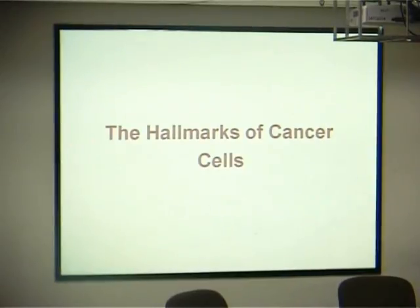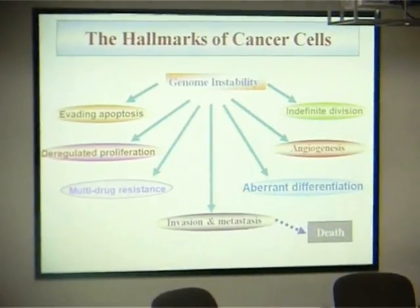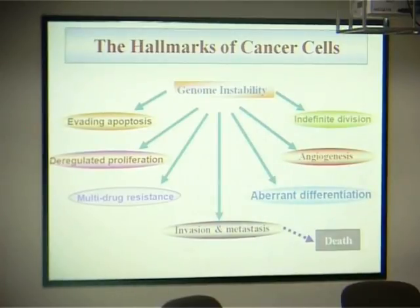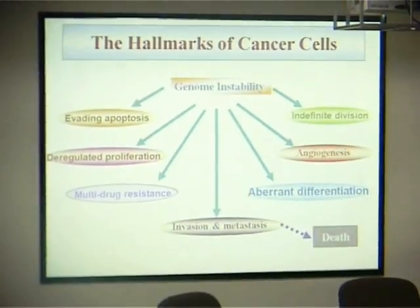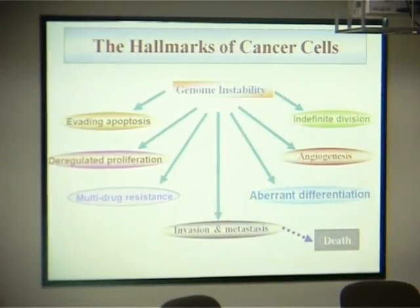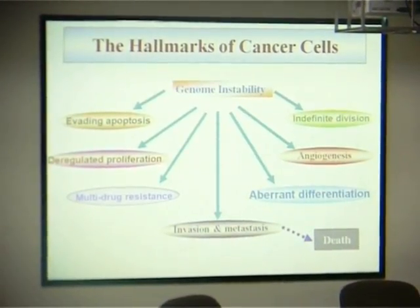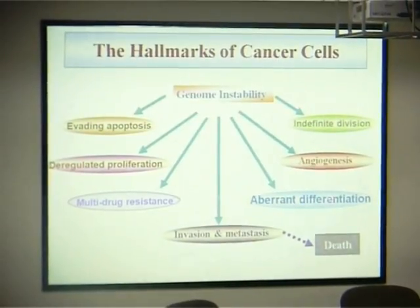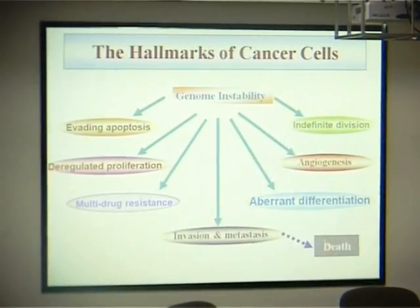The hallmarks of cancer cells include genetic instability, which may cause evading apoptosis, de-regulated proliferation, indefinite evasion, angiogenesis, multi-drug resistance, aberrant differentiation, and evasion leading to metastasis, which finally causes death.